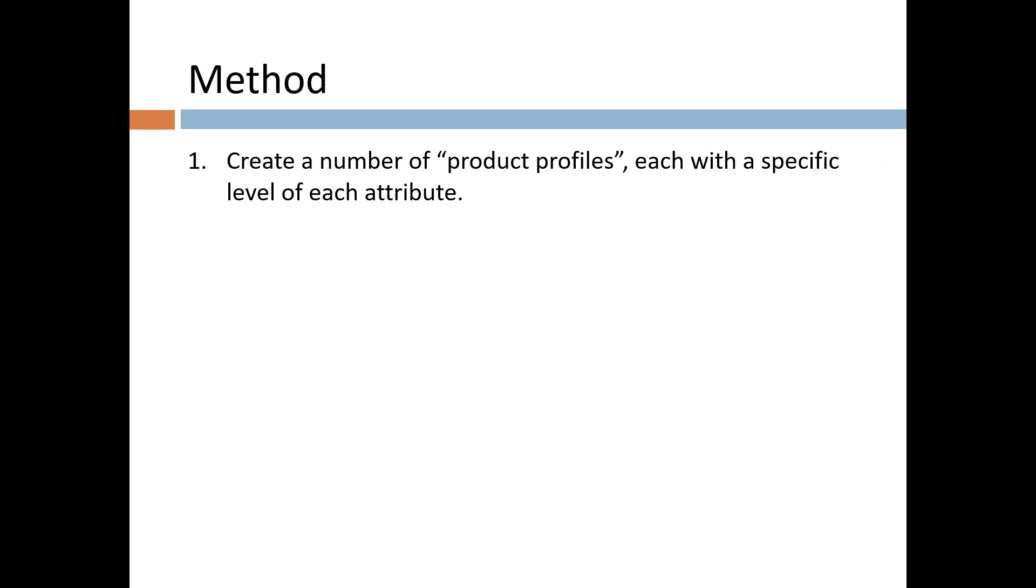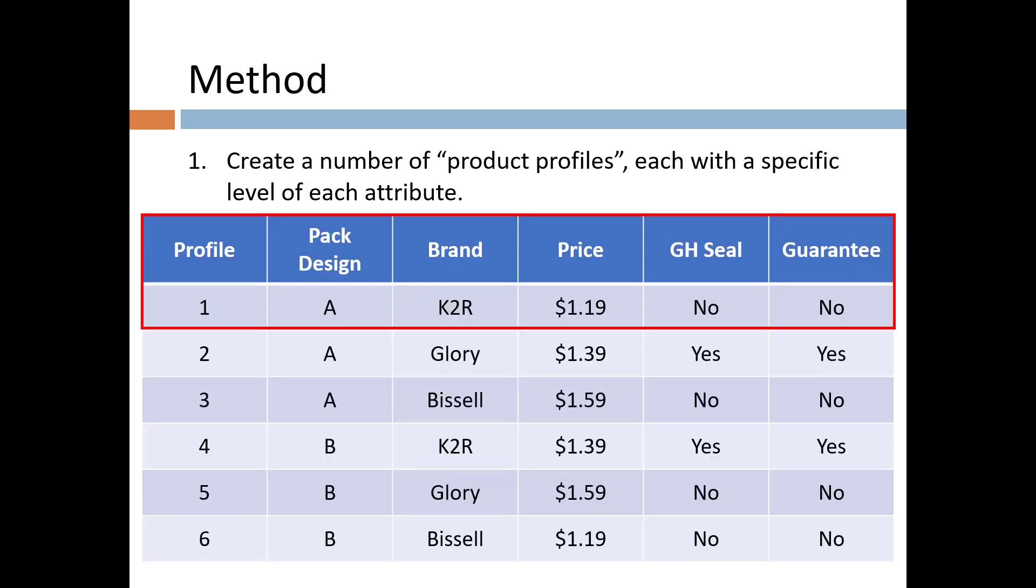The next step is to create a number of product profiles, or combinations of attributes, each representing a potential product design. For example, profile 1 has option A for pack design, K2R for brand, a price of $1.19, no good housekeeping seal, and no guarantee. Profile 2 has pack design A, Glory as the brand name, $1.39 price, a seal, and a guarantee, and so on.